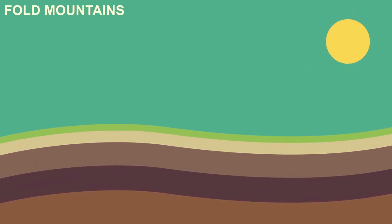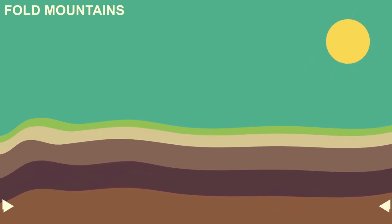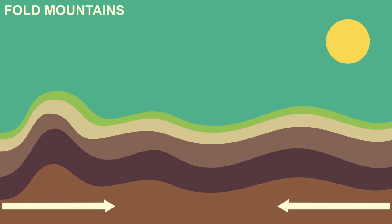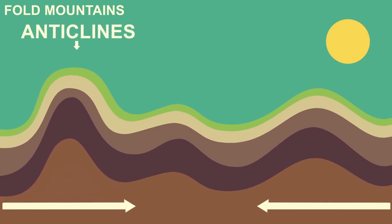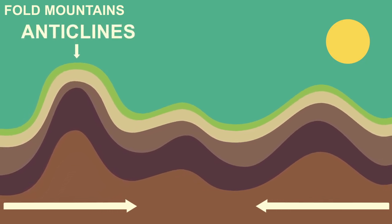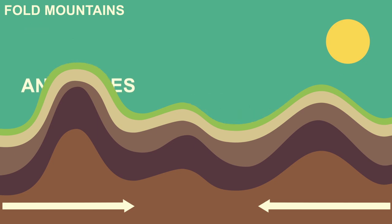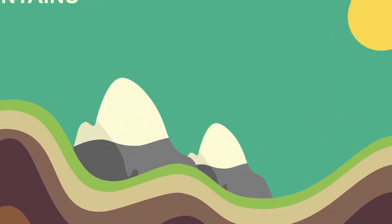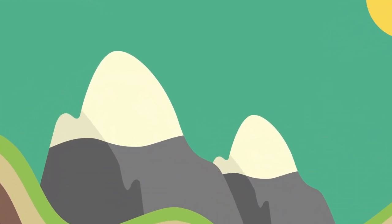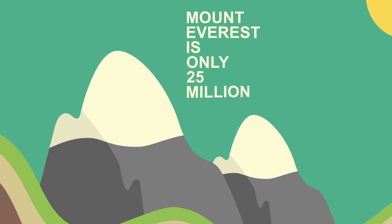Fold mountains are the most common type of mountain. As two plates converge, the crust pushes upwards, forming upward folds called anticlines and downward folds called synclines. Fold mountains are, geologically speaking, relatively young. For example, Mount Everest among the other peaks of the Himalayan mountain range was formed only 25 million years ago.